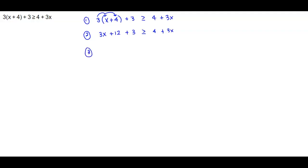Then we need to determine if we need to combine like terms. So we can combine like terms here. So we end up getting 3x plus 12 plus 3, which is plus 15. And that's greater than or equal to 4 plus 3x.